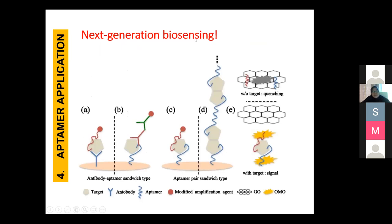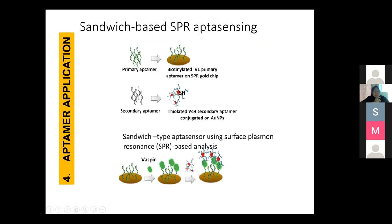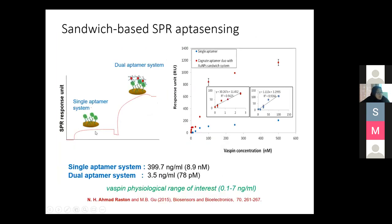For vaspin aptamer application — next-generation biosensing. I already explained about sandwich-type aptamer pairs. Having dual or three aptamers combined, we can easily modify them to enhance signal. For vaspin, I used SPR for vaspin aptasensing: the probe was conjugated on a gold chip, then vaspin was added, and for the second signaling probe I conjugated it with gold nanoparticles to enhance the SPR signal. We can see that single aptamer gives very low signal, but with the dual aptamer system, sensitivity was enhanced from 399 ng/mL to 3.5 ng/mL — vaspin can now be detected in the physiological range of interest.